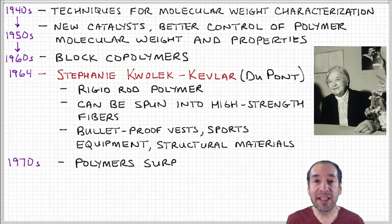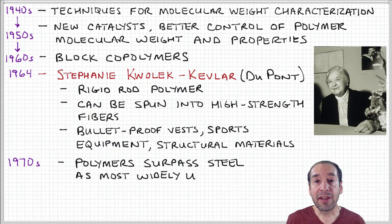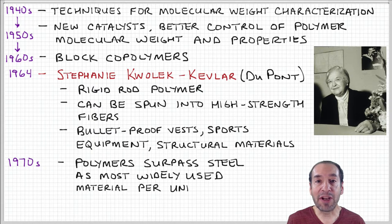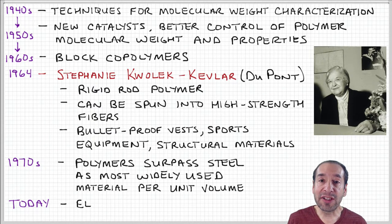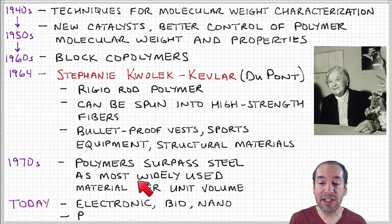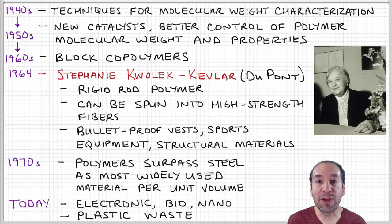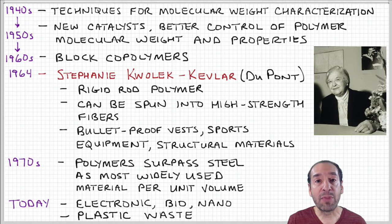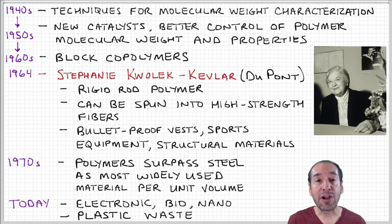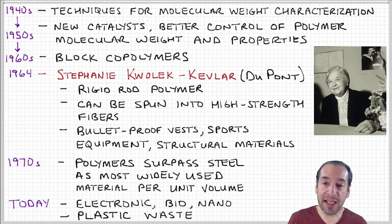As we moved into the 1970s, the technology to mass produce polymers and products made from polymers really increased. It was during this time that polymers or plastics actually surpassed steel as the most widely used material per unit volume — per unit volume because they are lighter than steel, so per unit weight wouldn't be a fair comparison. Before that time there were no plastic beverage containers; drinks came in tin or aluminum cans. Now those have largely been supplanted by plastic bottles, a transition that began in the 1970s.